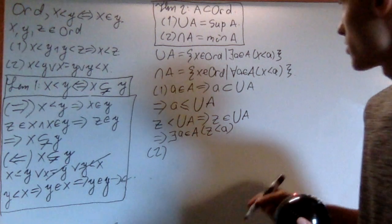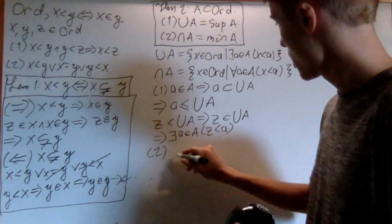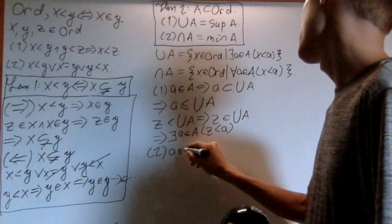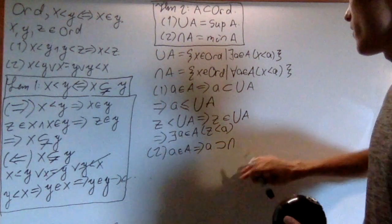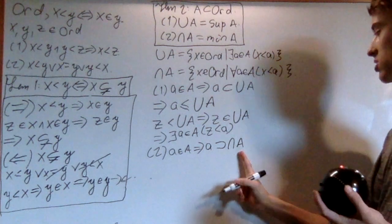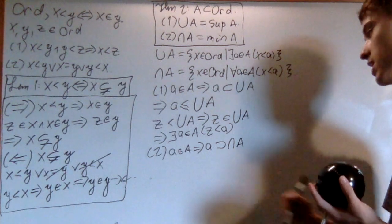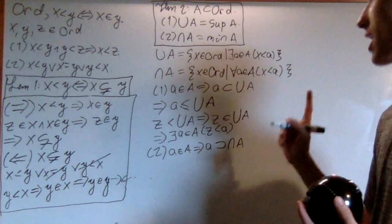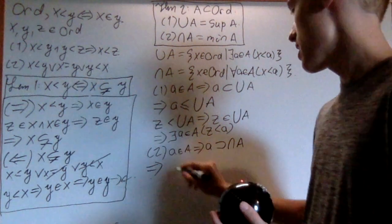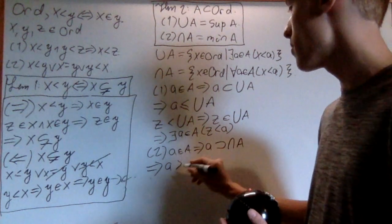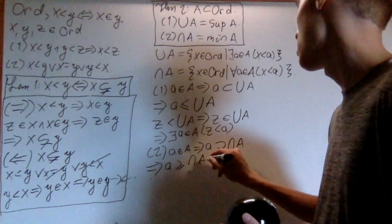The second part of this theorem is a tiny bit more difficult. Suppose a is an element of A. That means that a must contain the intersection of A, due to the fact that somewhere in there a is going to be included, and then we're restricting it by intersecting with other sets. So a must contain it — it's not a proper containment, though. Which then, by Lemma 1, a has to be greater than or equal to the intersection of A.